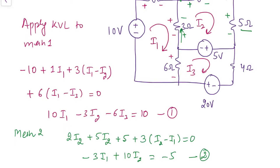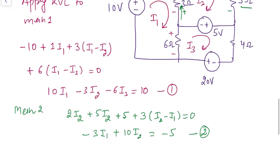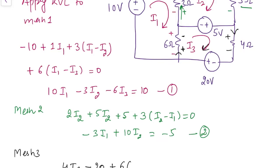Moving on to the third mesh: we assign polarity according to the direction of i3. For the 4 ohm resistance, i3 flows downward — plus minus. For the 6 ohm it flows upward — plus minus. Starting from the 4 ohm resistance: drop is 4 times i3. For the voltage source, the negative sign comes first: minus 20. The drop across the 6 ohm is 6 times the resultant current i3 minus i1, and this equals zero.